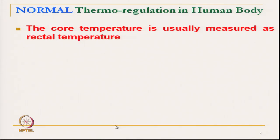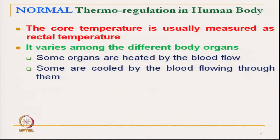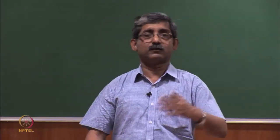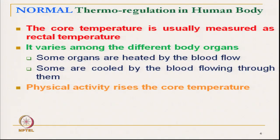In normal thermoregulation, the core temperature must be maintained constant; it is measured as rectal temperature. The core temperature actually varies among different body organs within a small range. Some organs are heated by blood flow and some are cooled by flowing blood through them. That is how the core temperature sometimes varies, although it remains very close to 37°C.